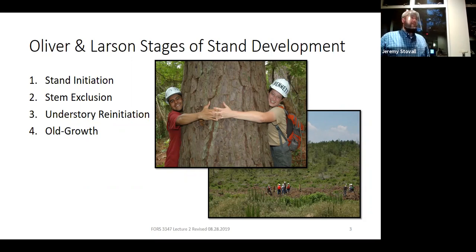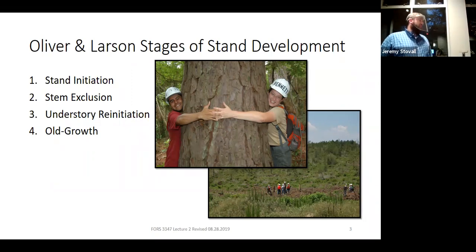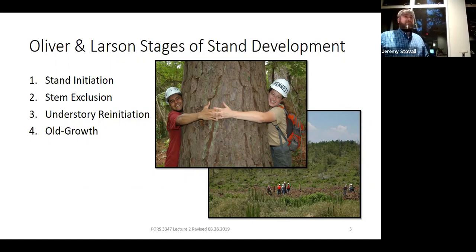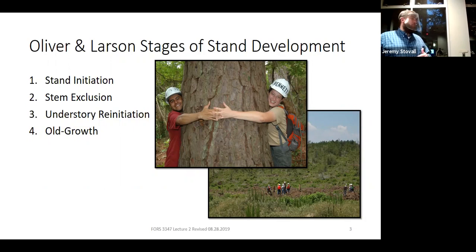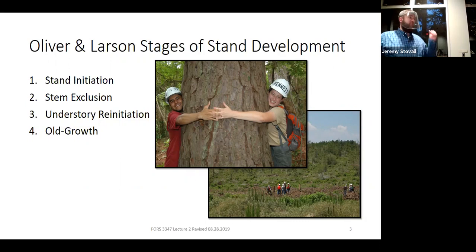When a gap forms, you get new growth — that's where we get the name understory re-initiation. You start getting new vegetation coming up in the understory: seedlings, herbaceous vegetation, vines, and other taxa, because there's now light there from gap formation and gap expansion. You also start getting much larger trees that are more complex structurally — larger limbs, more diverse epiphytic communities, and structural complexity in the crown. As trees die from density-independent mortality and fall down forming gaps, you get large down woody debris, and some that die and remain standing become snags. You end up with more and more structural complexity.